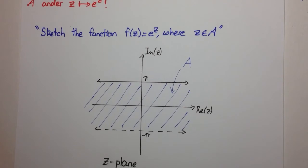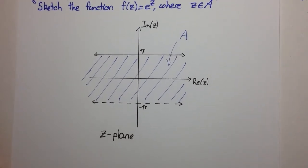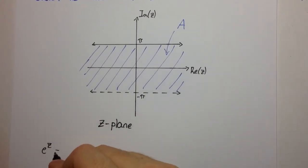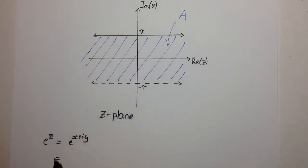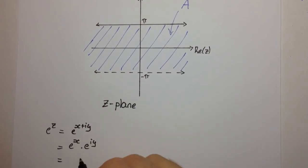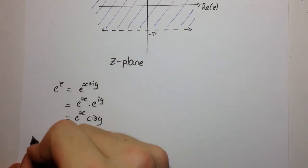Now we need to work out what values F of Z can take. The way we do this is by considering first the modulus of F of Z, and then the argument of F of Z. F of Z is e to the Z, which is e to the X plus iY. We can break this up into e to the X times e to the iY, and we know that e to the iY equals cos Y plus i sin Y, by Euler's formula. So we have e to the X times cis Y.